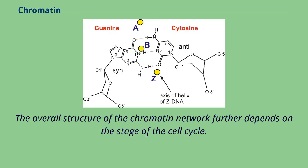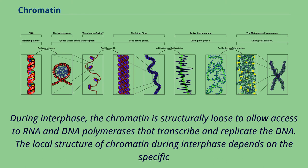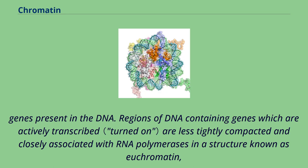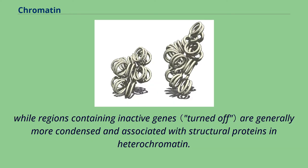The overall structure of the chromatin network further depends on the stage of the cell cycle. During interphase, the chromatin is structurally loose to allow access to RNA and DNA polymerases that transcribe and replicate the DNA. Regions of DNA containing genes which are actively transcribed are less tightly compacted and closely associated with RNA polymerases in a structure known as euchromatin.